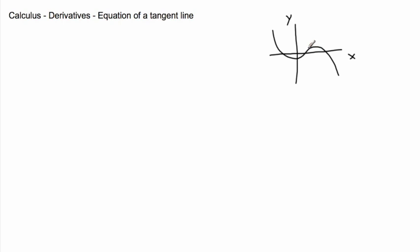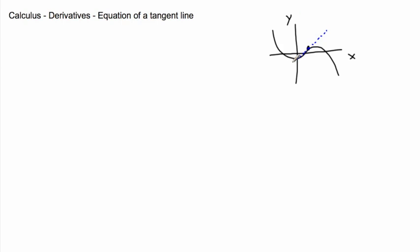If I want that tangent line at this point right here, I would draw a dotted line that matches it. A derivative gives me the slope of that tangent line, but what if I want the full equation? Remember, the equation of a straight line is Y equals MX plus B — where M is the slope or gradient, and B is the Y-intercept.